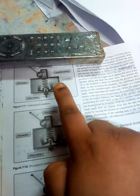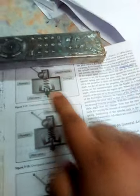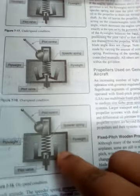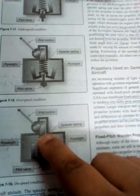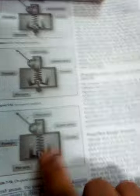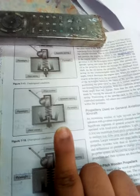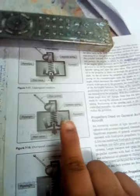This results in lower RPM of the propeller because the torque will be very less. In the on speed condition, the spring tension and the flyweight tension will be equal. The flyweight will not go inside or outside — my finger will be balanced, equal to the spring.